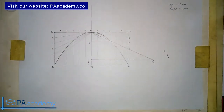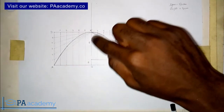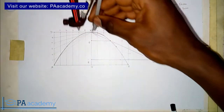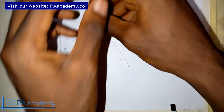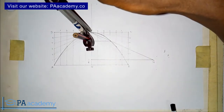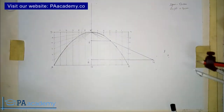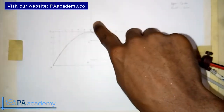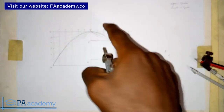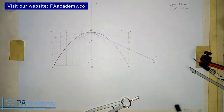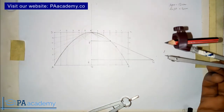Now that we know our focus, the next thing is to find the directrix. To do that, bring your compass and use it to get the length of VF. Place your compass on the drawing and adjust it to the length of VF. Then use it to draw a semicircle. Where the semicircle touches this line, note that point — let's call it point M. From point M, you are going to draw a line perpendicular to the axis line.